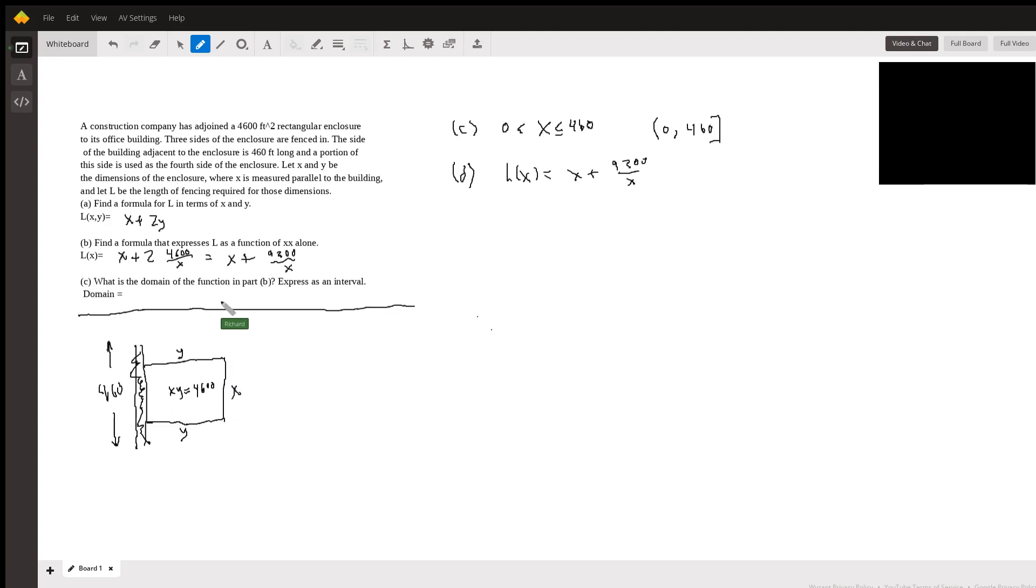We're instructed to write down a function for the length of fencing that would be needed here. You can see from the diagram that it's going to be x plus 2y. We're told that the area of the enclosure has to be 4600 square feet, so that gives us x times y equals 4600.